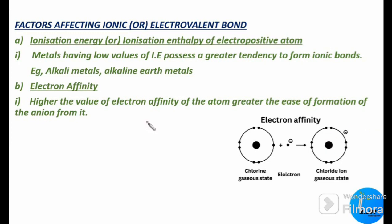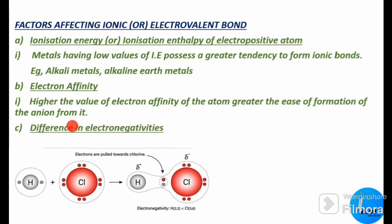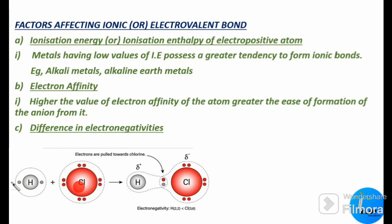Next, we shall see how the difference in electronegativities affects the formation of the ionic bond. Electronegativity is the tendency of an atom to attract electrons towards itself. An electropositive and an electronegative atom involved in the formation of an ionic bond should have a large difference in electronegativity.